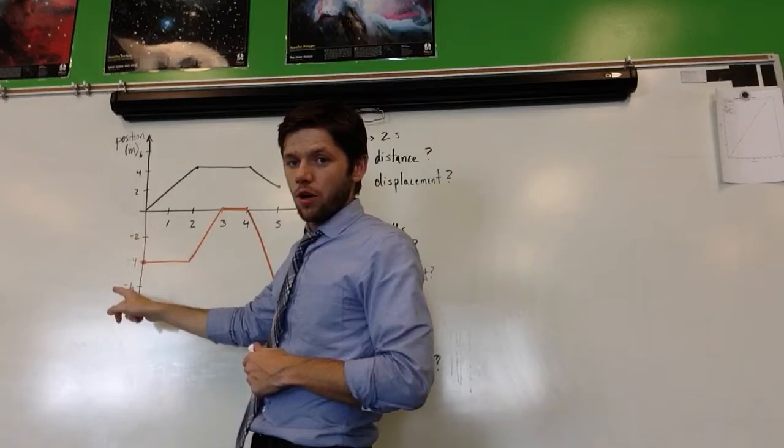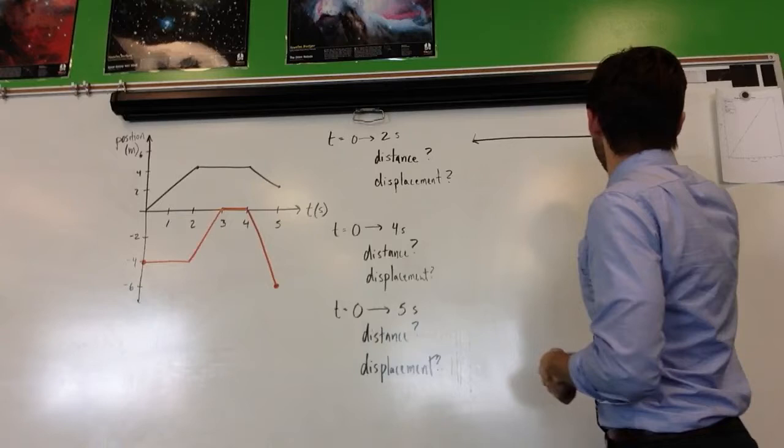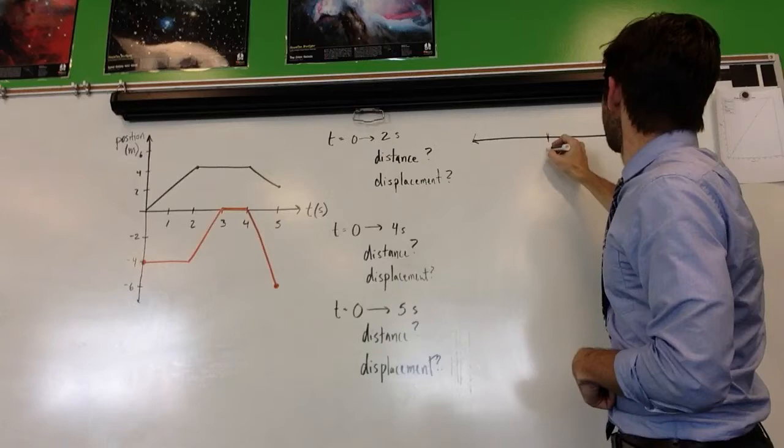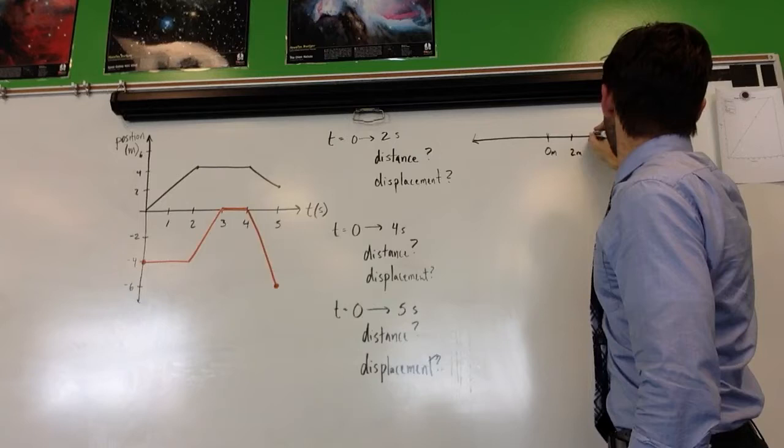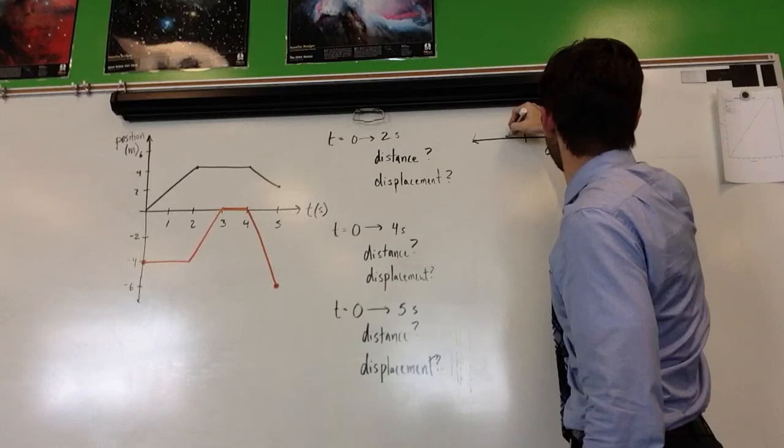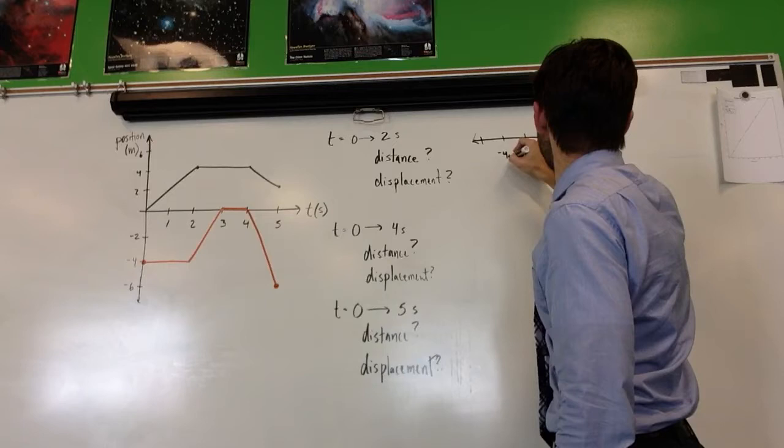So to start that off, I'm going to draw a number line that looks like this. I'm putting the origin, 0 meters, in the center. That relates to this point on the position graph. And then I'm going to go up in the positive direction, 2, 4, and 6. Trying to keep it evenly spaced. So this will be negative 2 meters, negative 4 meters, and negative 6 meters.